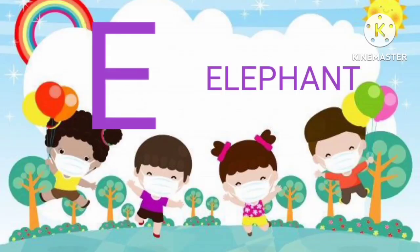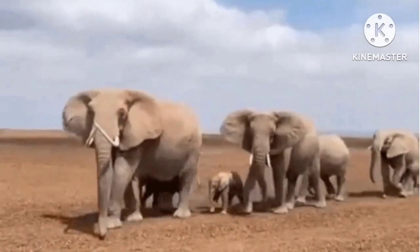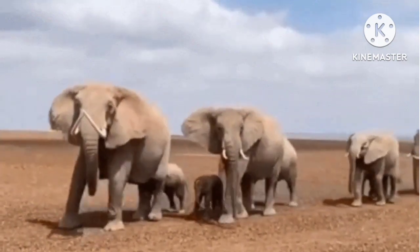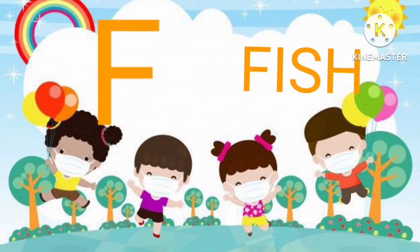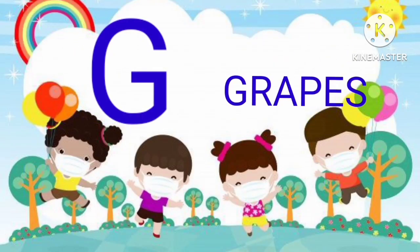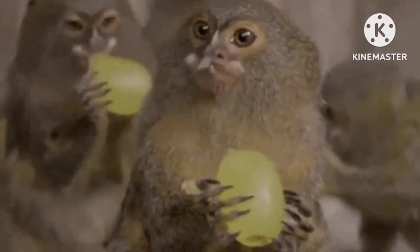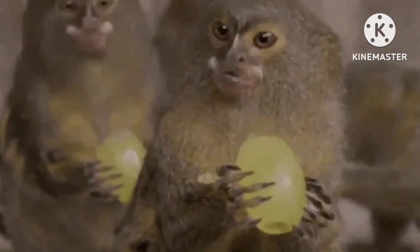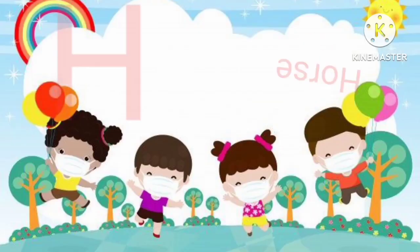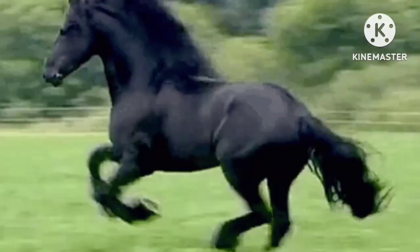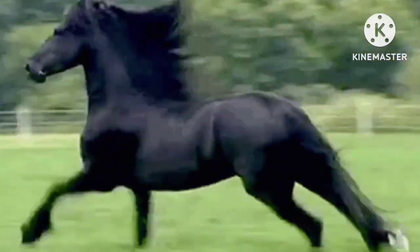E for elephant. F for fish. G for crabs. H for horse.